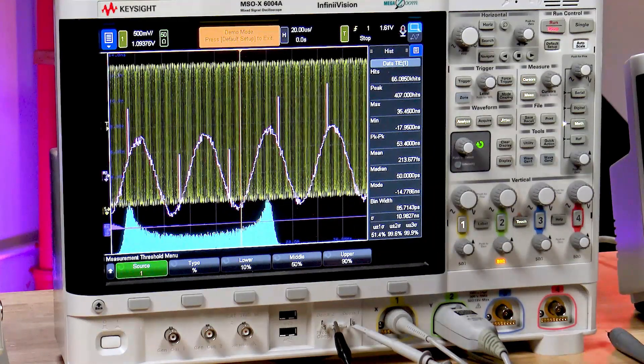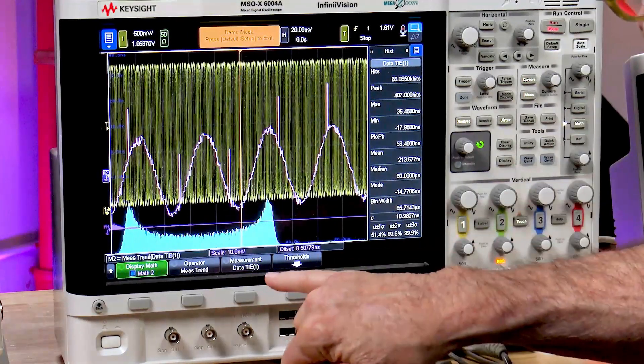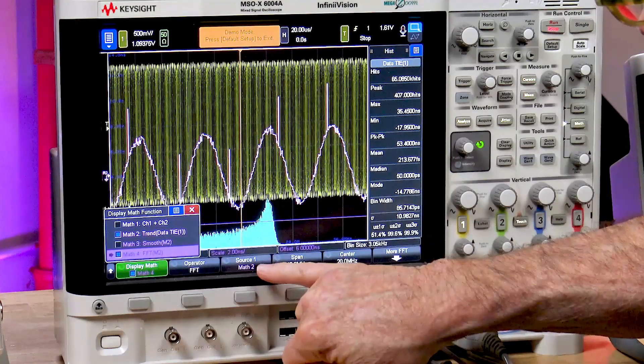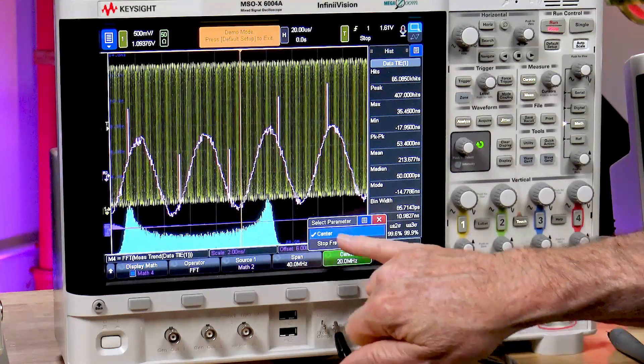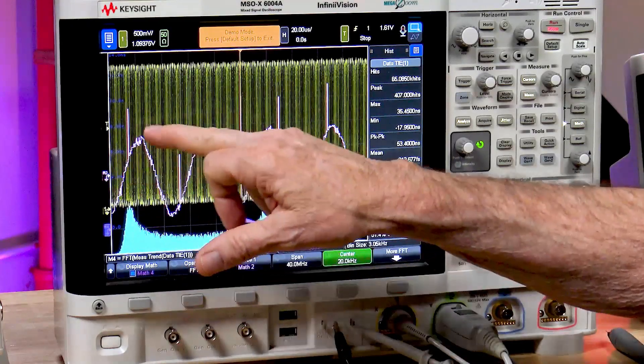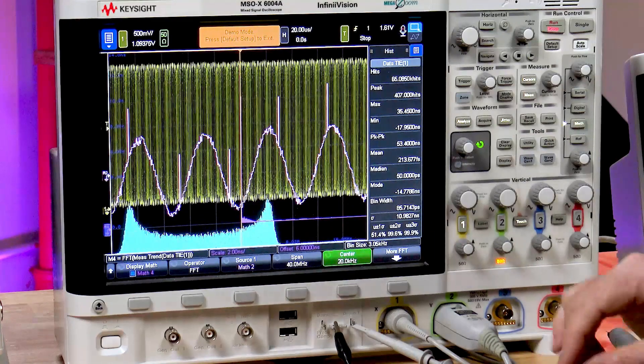The third trace is the jitter spectrum. Let me change the scaling on that one so we can see it more clearly. And I've made some measurements ahead of time. And I know this sinusoidal modulation is right around 20 kilohertz.